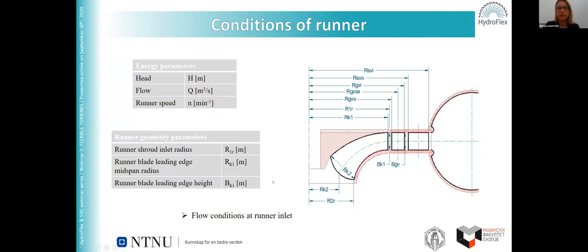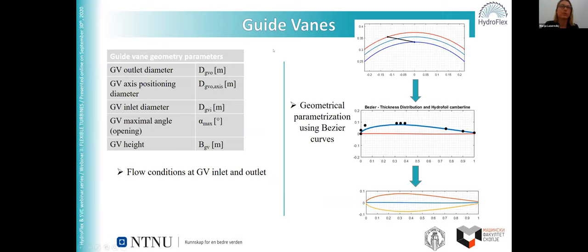By calculating the flow conditions in front of the runner and using the guide vane height as an input variable parameter, along with empirical data, we calculate the guide vane inlet and outlet diameter of the cascade, and the diameter of the axis where the guide vanes are positioned.